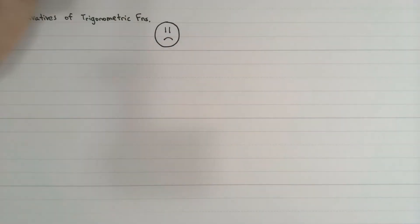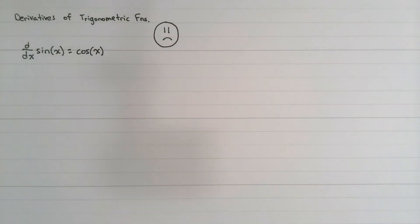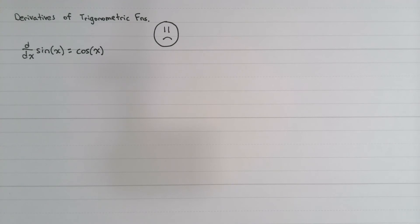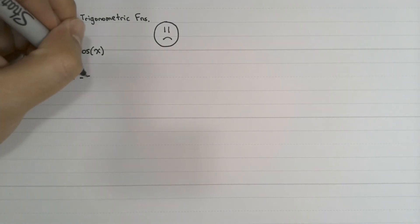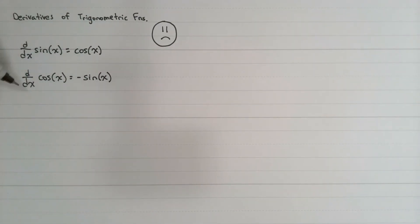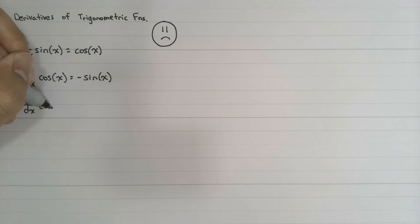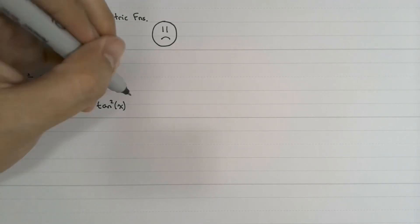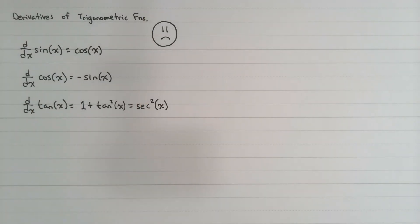The derivative of sine of x is cosine of x. The derivative of cosine of x is negative sine of x. And the derivative of tangent of x is 1 plus tangent squared of x, or simply secant squared of x. This is actually something we can find using a rule called the product rule, but we'll learn about that later.